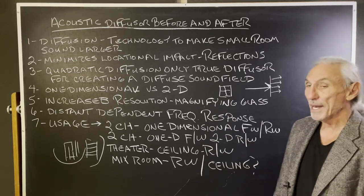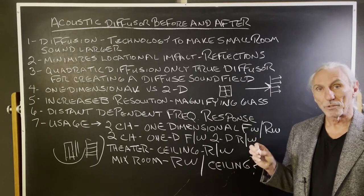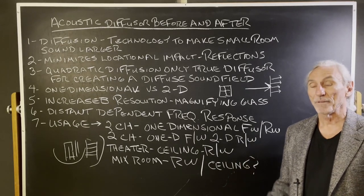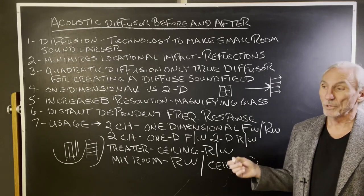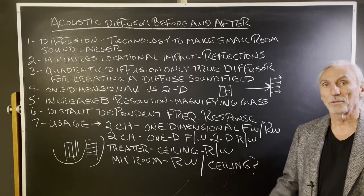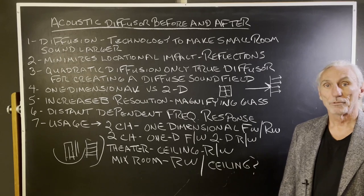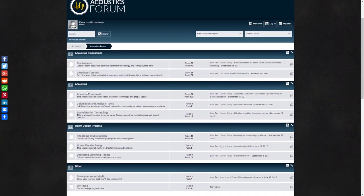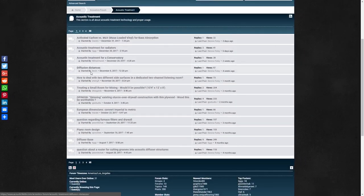Acoustic diffuser before and after — think about your strategy, think about your objectives, and then treat each surface area to work towards achieving that objective. Have a strategy so you're not wasting money, and most importantly, you're not wasting time. You'll get to the result you want faster and spend less. I really hope this helps. Thank you for watching, and if you liked it, please give us a thumbs up. We have a newsletter with special price discounts, and a forum on our website where you can ask questions and get real answers.